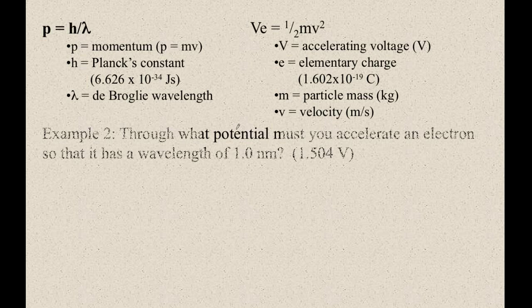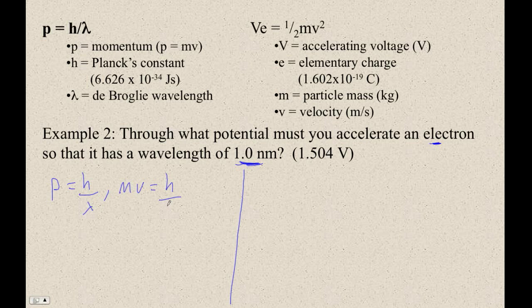And that is, through what potential must you accelerate an electron to give it a de Broglie wavelength of one nanometer? And there's lots of ways to do it, but let's just bust out the de Broglie wavelength. Using the IB formula. So MV equals Planck's constant over the wavelength.